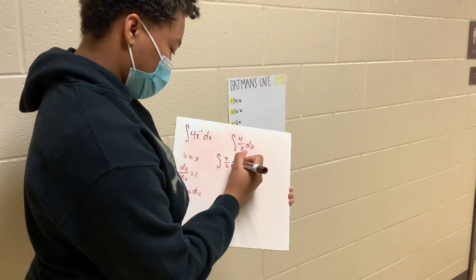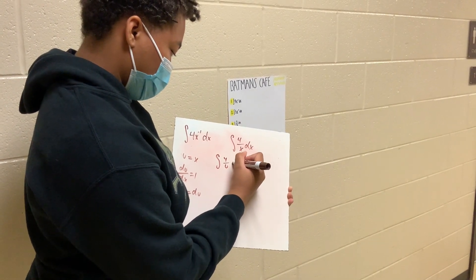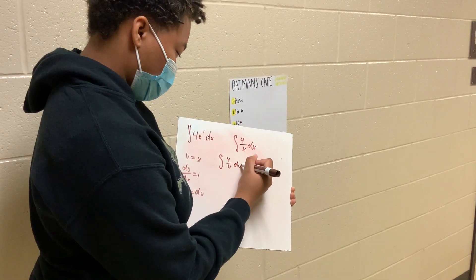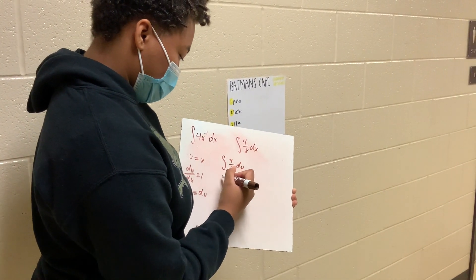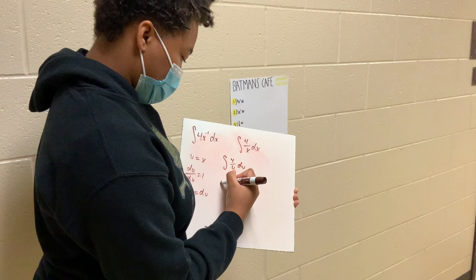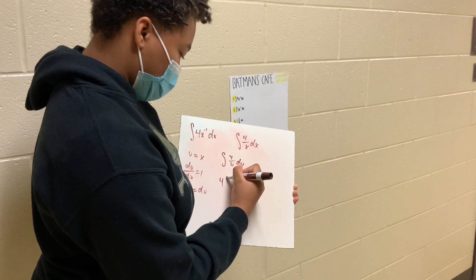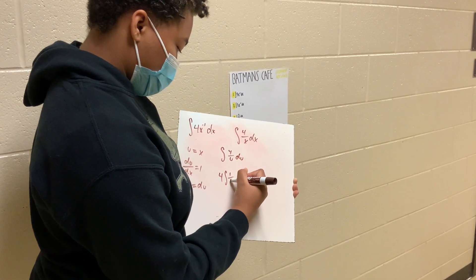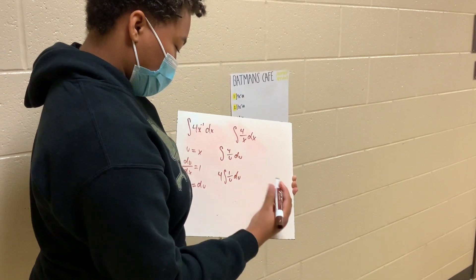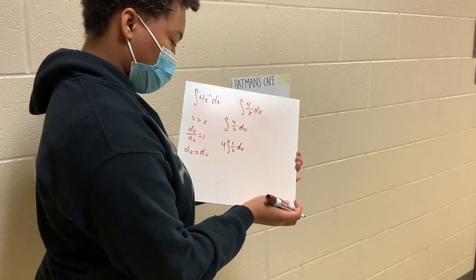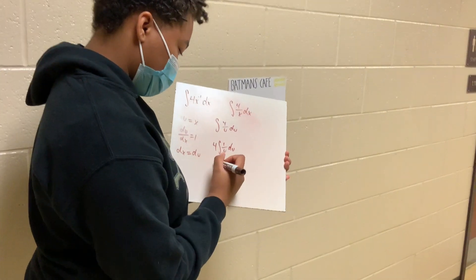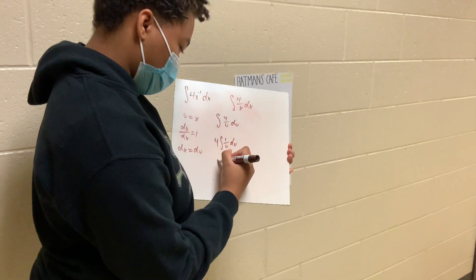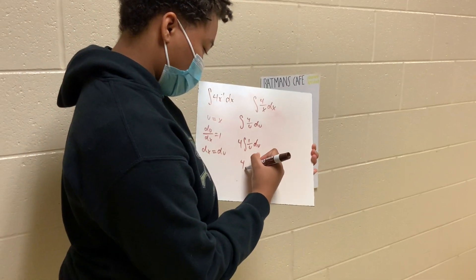We'll sub in x for u, and then we take out the 4, and then we're able to use the formula to solve for the rest of the equation.